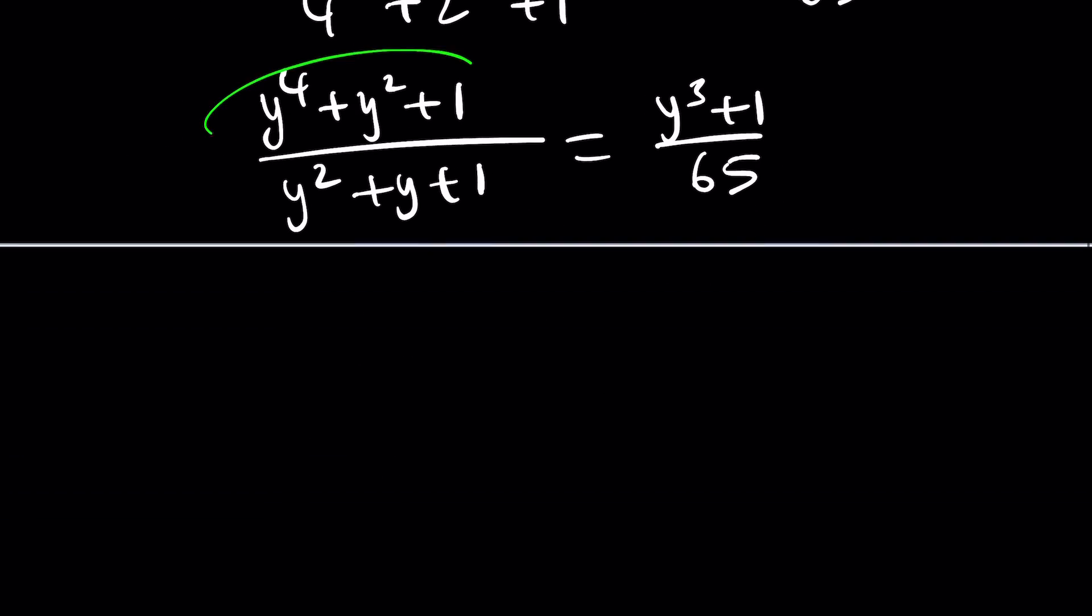y^4 + y^2 + 1 divided by y^2 + y + 1 equals y^3 + 1 divided by 65. Now, here's the trick for this kind of problem. This is factorable. Did you know that? Probably not. But if you dealt with fourth powers, that's why algebra is so important. That's why this channel focuses mainly on algebra, trigonometry, and number theory. Geometry is very little, I'm sorry about that, because that's not my strength.